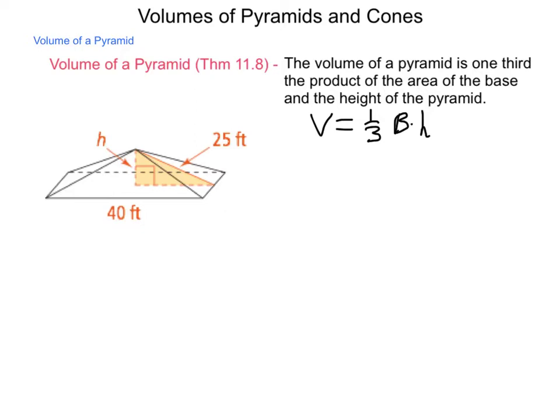We need to know the base area, and we need to know the height. Well, what we've been given is the length of one side of this base and then the slant length or slant height.